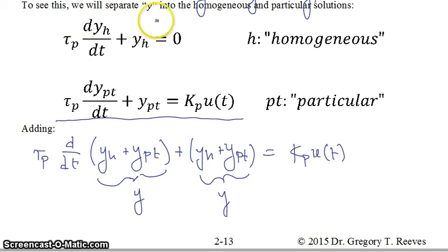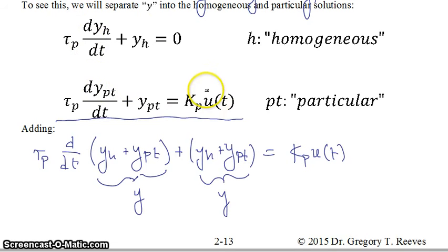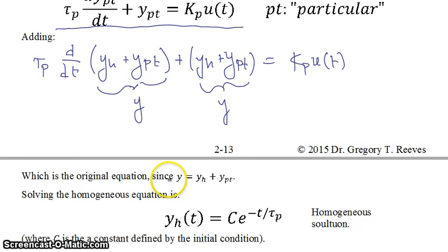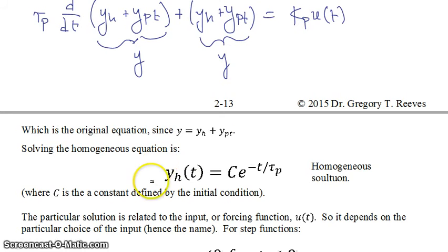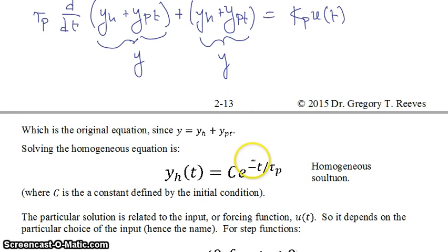The homogeneous equation is always the same — it never changes. There is exactly one solution to it, and that solution looks like this: y homogeneous equals some constant times e to the minus t over tau p. Remember, the dynamics of your homogeneous solution are e to the minus t over tau p — those are the dynamics of a first-order process, and it cannot be anything different from that.